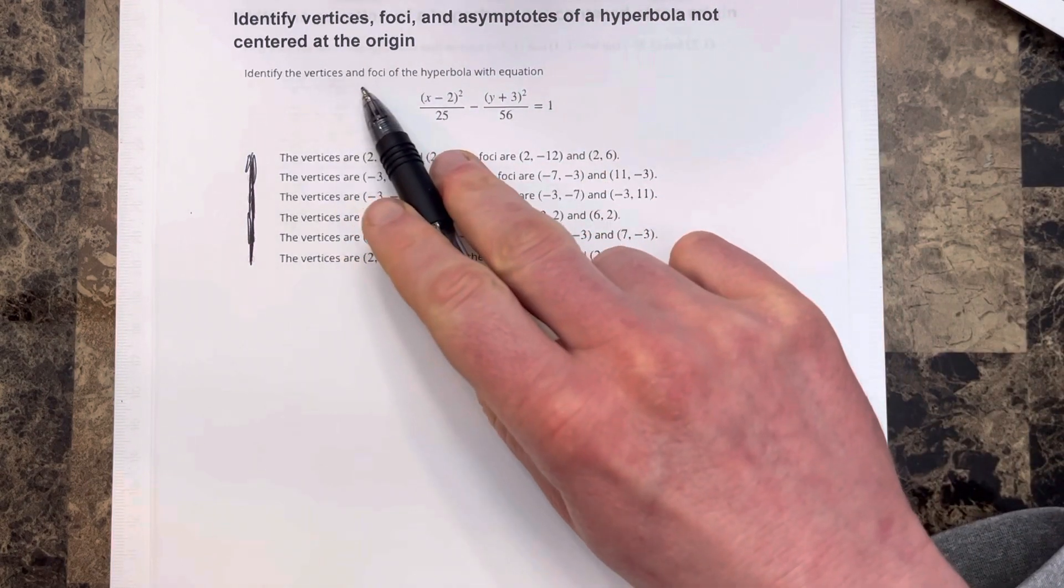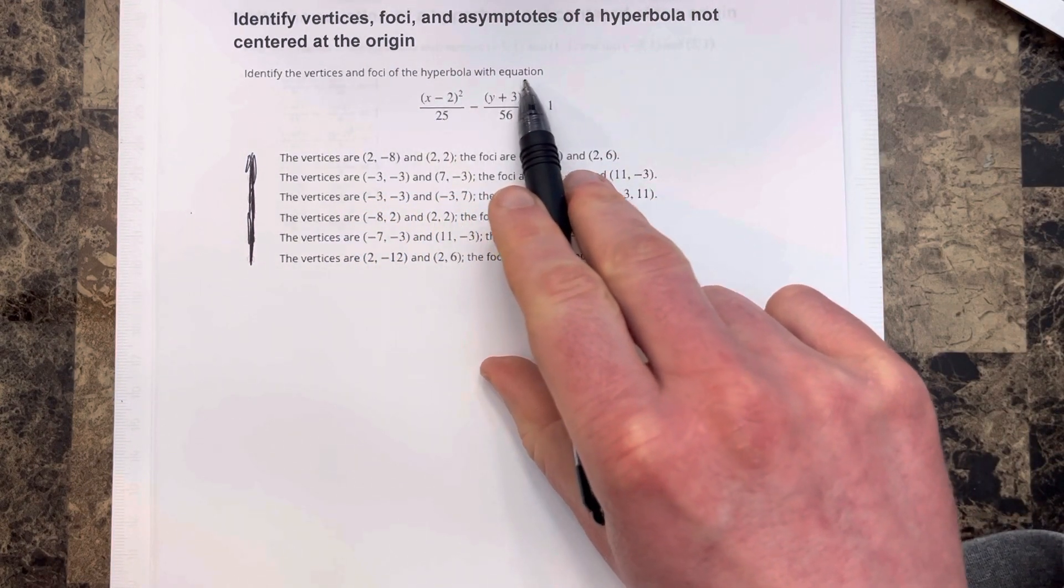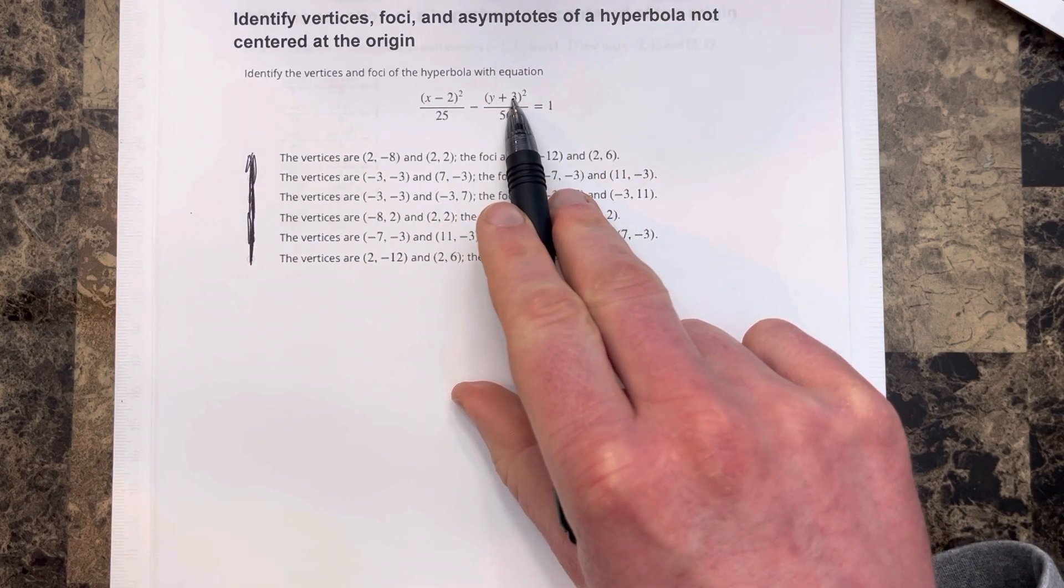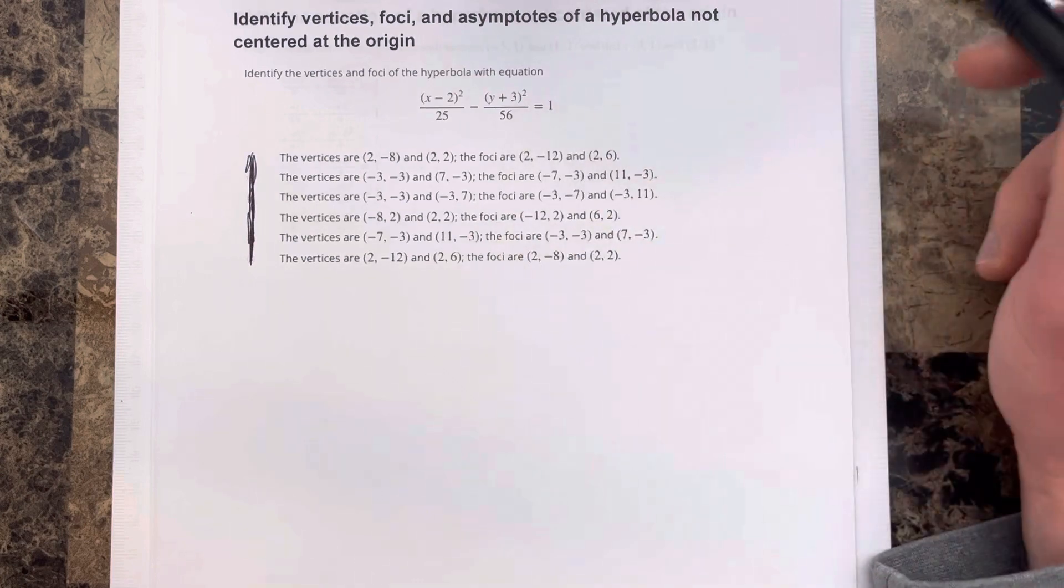Identify the vertices and foci of the hyperbola with the equation x minus 2 squared over 25 minus y plus 3 squared over 56 equals 1.